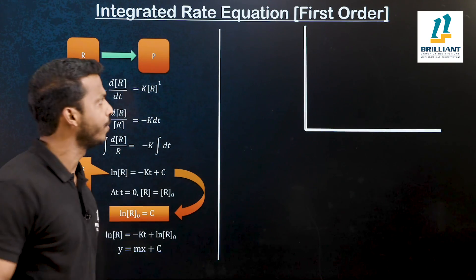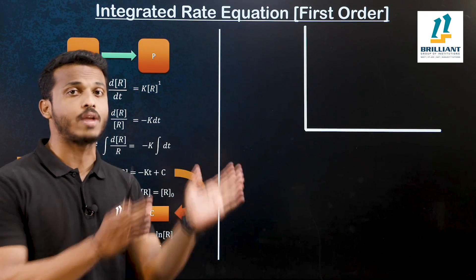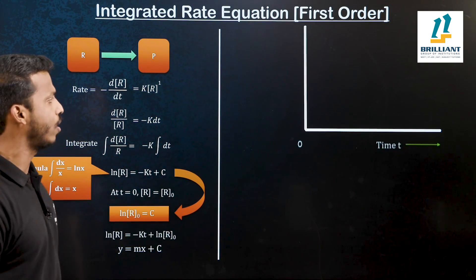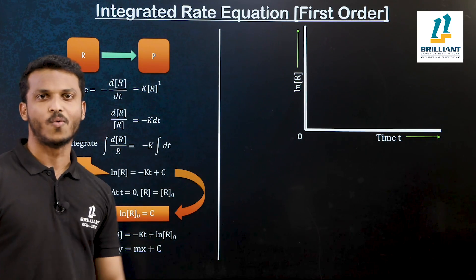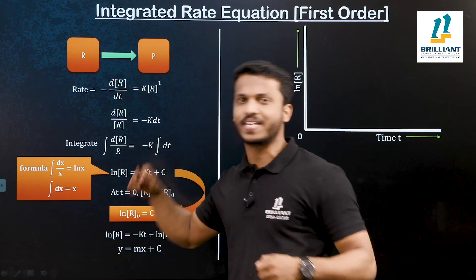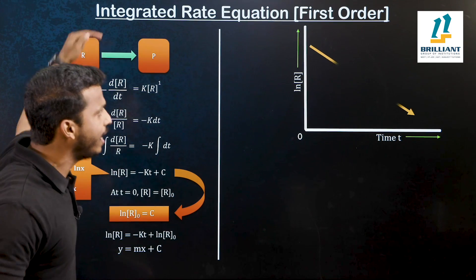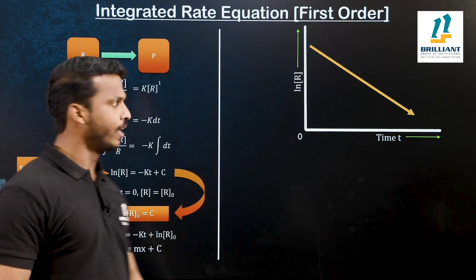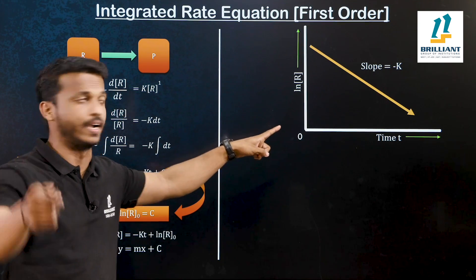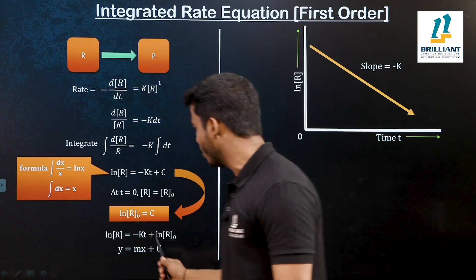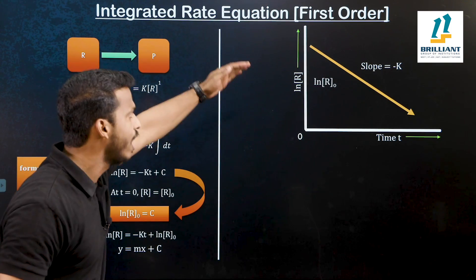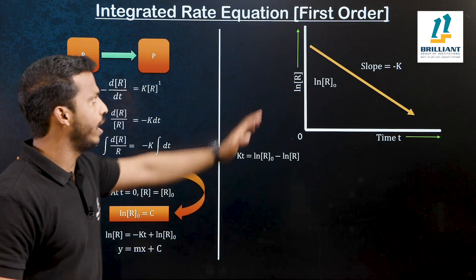Let's go for the graph. We plot ln R on the y-axis and time on the x-axis. The slope of the line is minus k, which is a negative slope, so the nature of the line goes downward. The slope of the line in the first order reaction graphical method is minus k — this is an exam question. The y-intercept c is ln R₀, which is this distance on the graph. It is possible to calculate the K value through the slope.